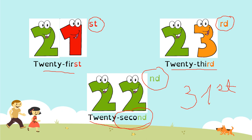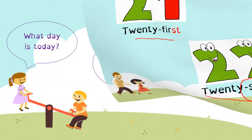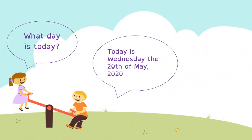But when do we use these numbers? We use these numbers to say the date. For example, what is today? Today is Wednesday, the 20th of May. We don't say 'the 20,' we say 'the 20th.' Don't forget to write the 'th' next to the number.